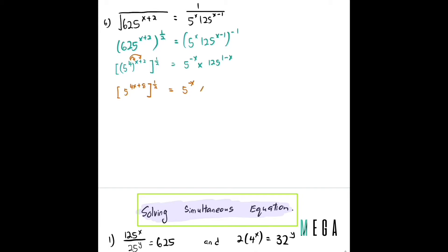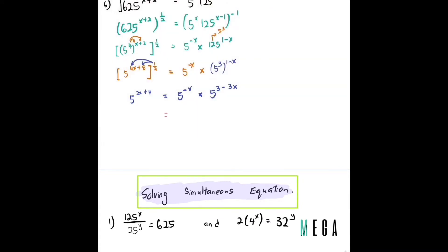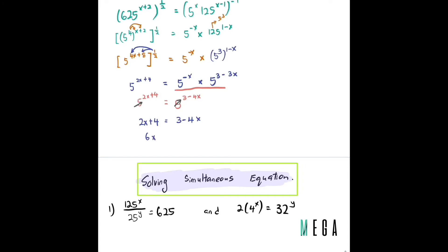I can write 125 as 5 to the power of 3, so that term becomes 5^(3·(1−x)). Multiplying the 1/2 through: 5^(2x+4) = 5^(−x) · 5^(3−3x). By the law of indices, combining gives 5^(−x + 3−3x) = 5^(3−4x). Now cancelling the base: 2x + 4 = 3 − 4x, so 6x = −1 and x = −1/6.